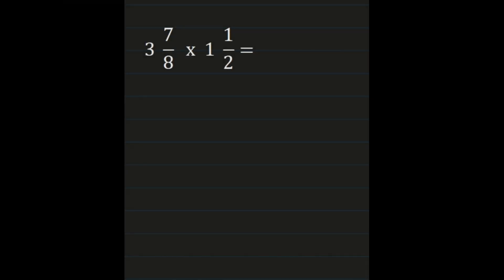For our first example we have 3 and 7/8 times 1 and a half — a mixed number times a mixed number. We need to multiply our numerators together and our denominators together, which means we have to turn these mixed numbers into improper fractions.